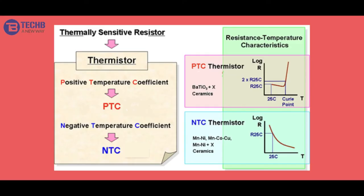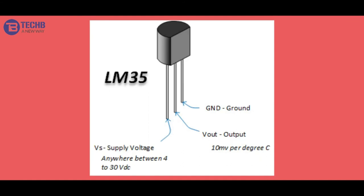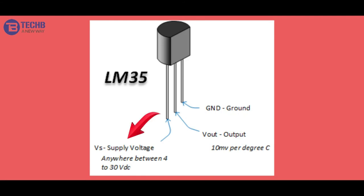We will discuss the sensor's internal parts, the sensor's internal parts function, and pin configuration. Regarding output — there is an analog signal. One pin is GND (ground/negative), and another is positive (VCC).